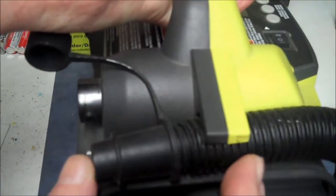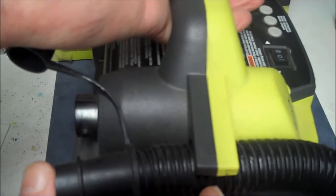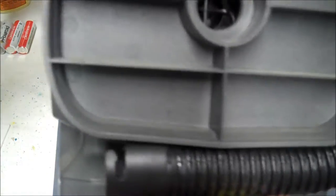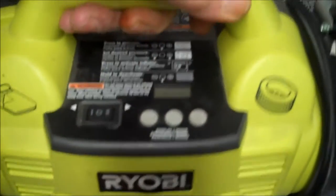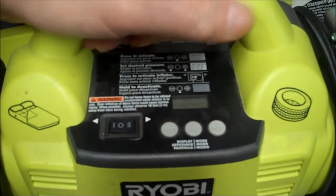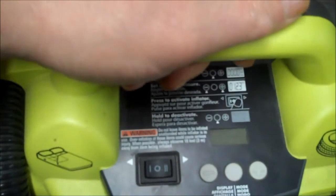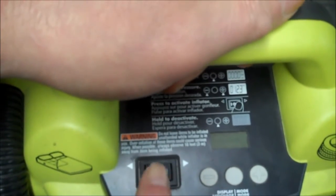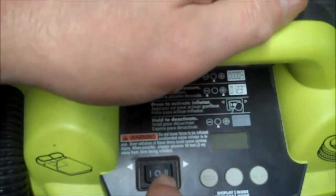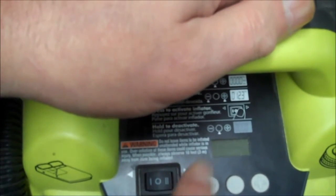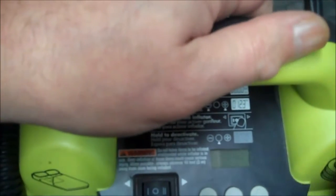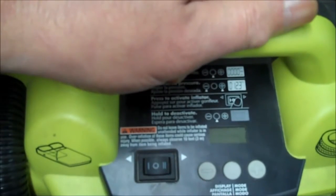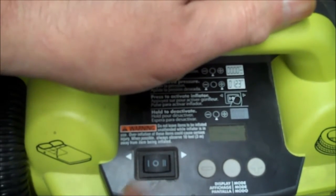Then on this side we have the deflator side or inflator deflator side. And that hooks up to the back port here. And depending on what you're going to do, using this switch here, when you push it to this side it makes the inflator work. And when you push it that way it makes this side work.